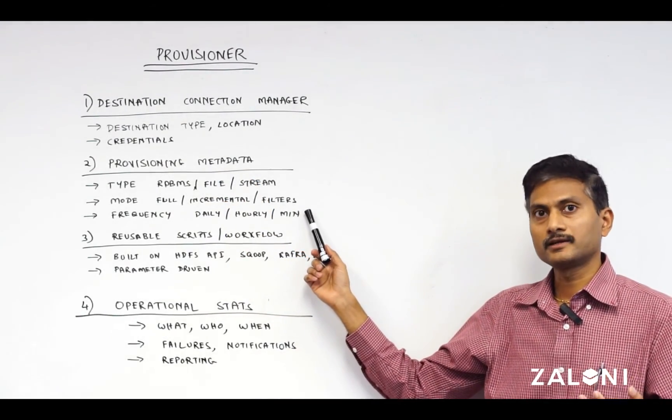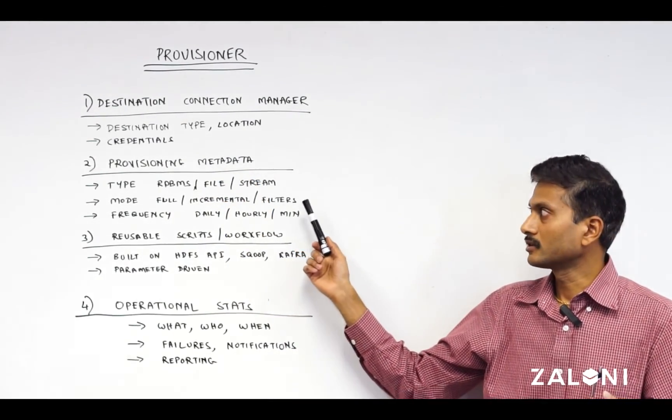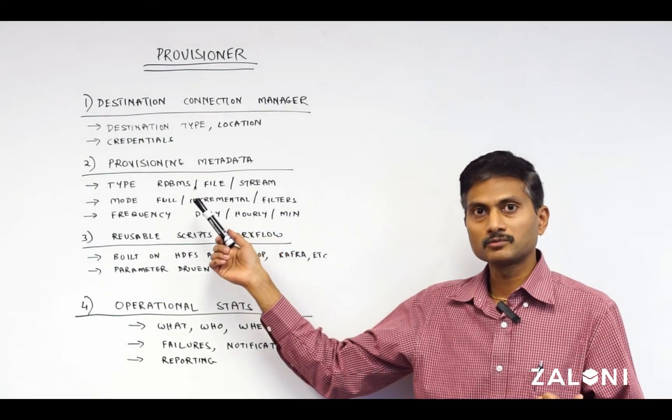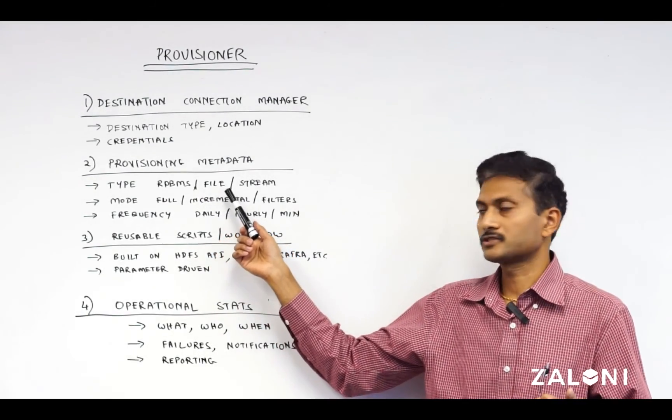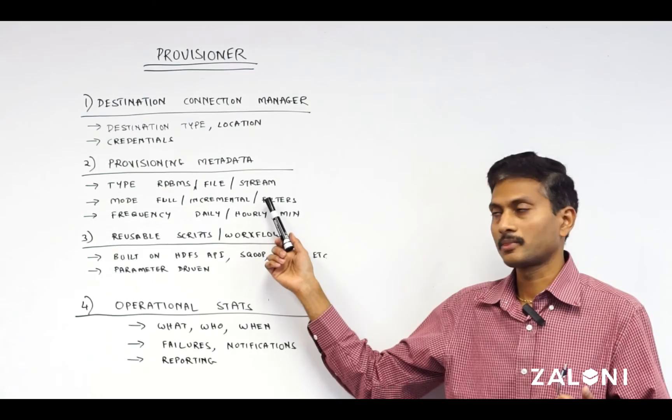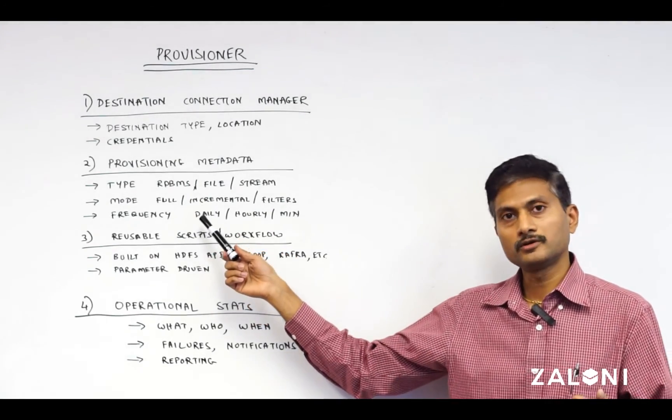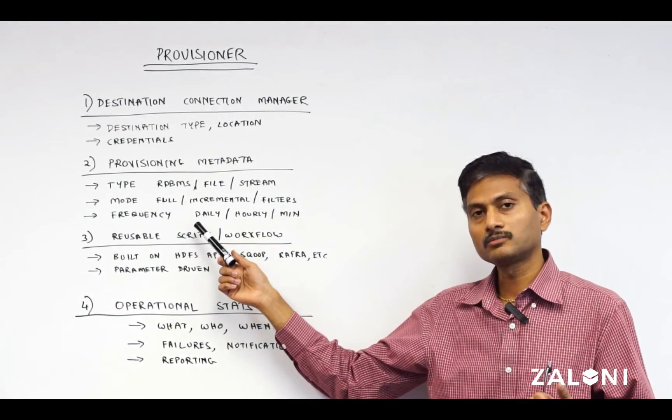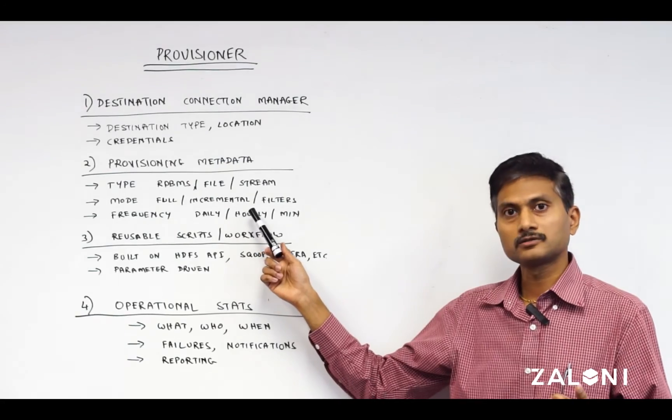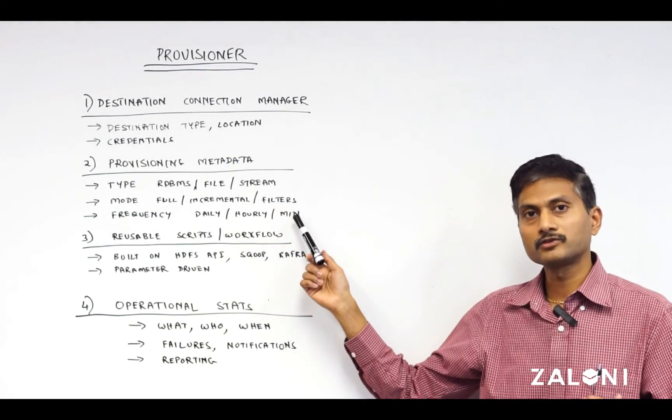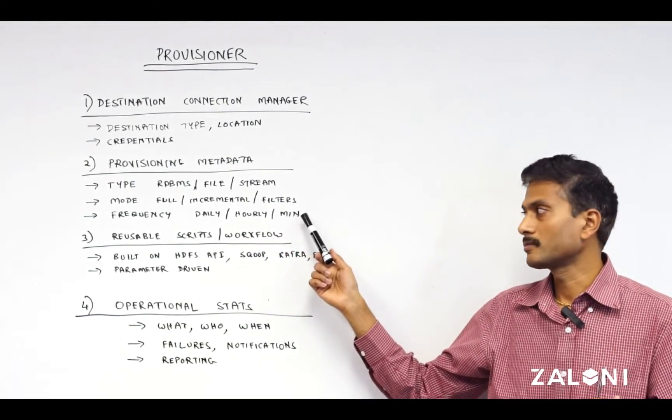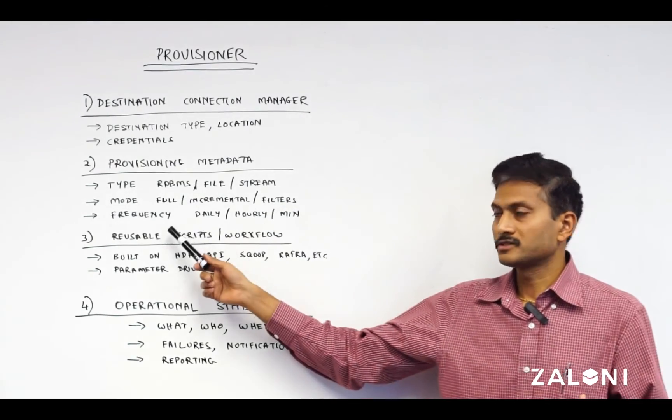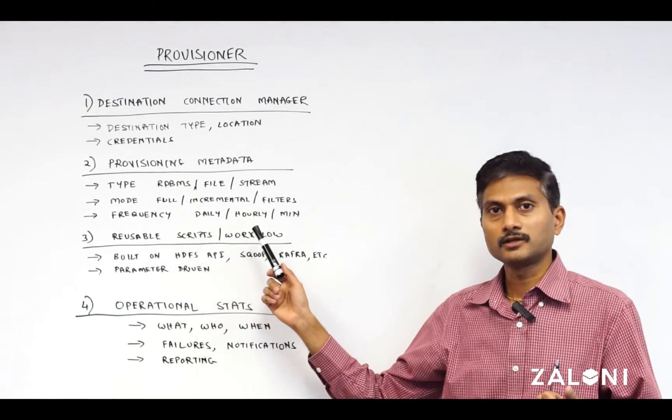Two, what is its metadata for the provisioning? That should include, is it an RDBMS destination, file system, or is it streaming? What's the mode of request? Is it a full push or incremental? Does it have filters that we need before we provision it out? What's the frequency: daily, hourly, or minutes?